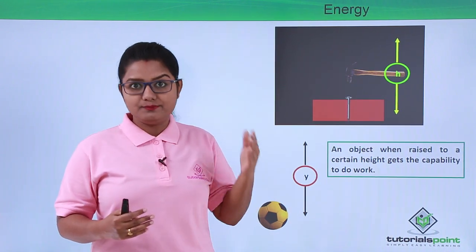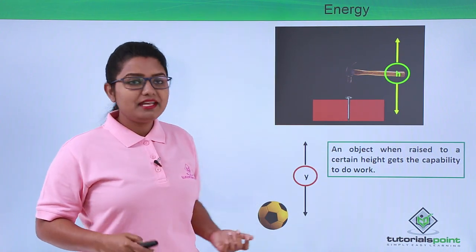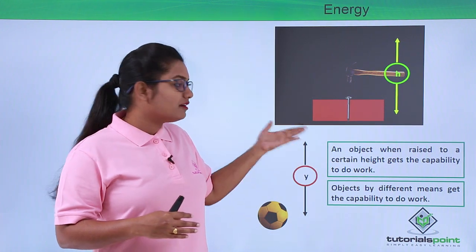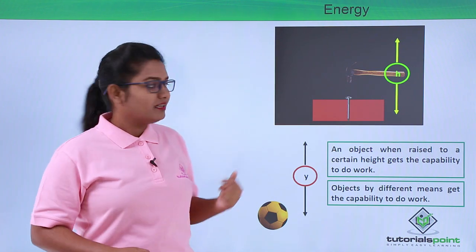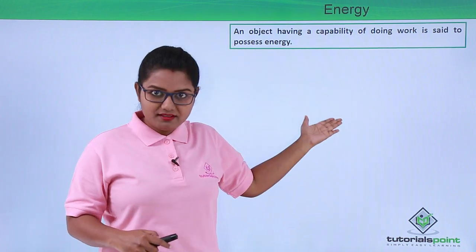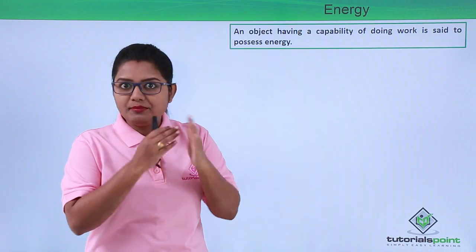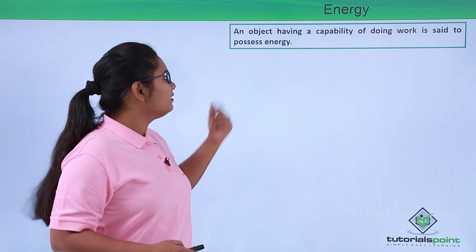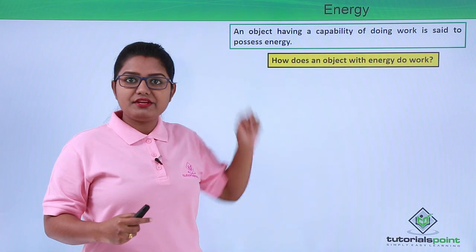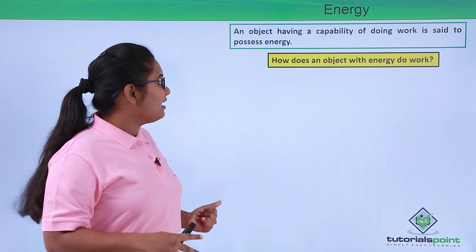From these examples we can conclude that an object raised to a certain height is also capable of doing work. So objects can get the capability of doing work by different means — either by moving with a certain velocity or by being raised to a certain height. We already know that an object which has the capability of doing work is said to possess energy. So whenever an object is capable of doing work, it must be having some amount of energy. This energy comes either from the object moving with a certain velocity or from being raised to a certain height.